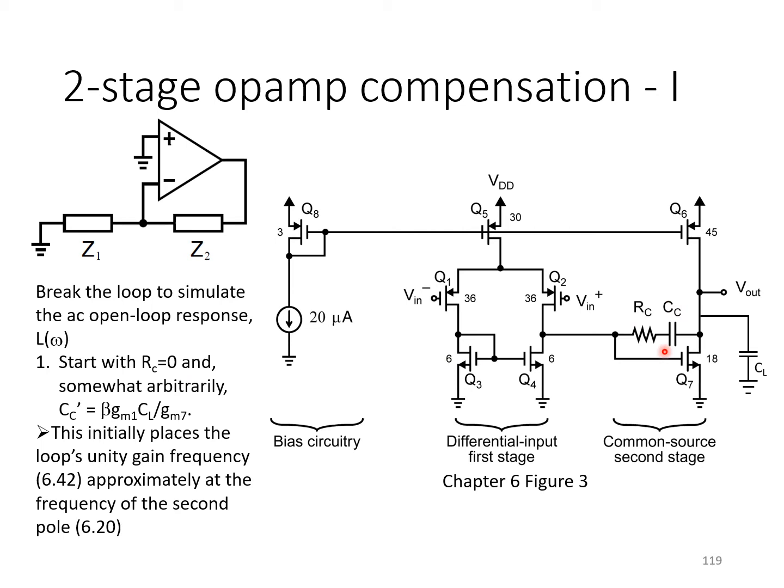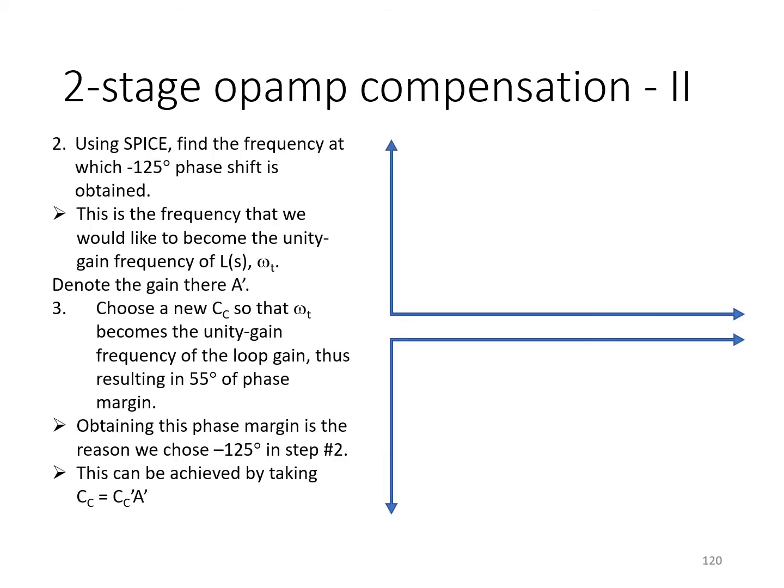but essentially selecting the compensation capacitor at this value should give you somewhere in the neighborhood of 45 degrees phase margin. And probably not enough, but it's certainly enough to allow you to clearly discern the first and second poles of the op-amp when looking at its open loop frequency response. At this stage, you should not have RC included. You should just have RC set to a very small value of, for example, 0.1 ohms in the schematic.